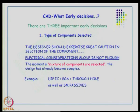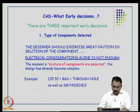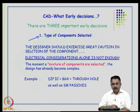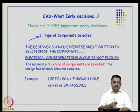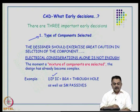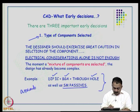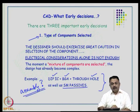When working in CAD as a designer, three important early decisions must be made. First: the type of components selected. Exercise great caution — electrical considerations alone are not enough. A mixture of components such as DIP ICs, BGAs, through-hole devices, and surface-mount passive devices makes the design complex. The assembly process becomes the first key question — how will a mixed-component board be assembled?